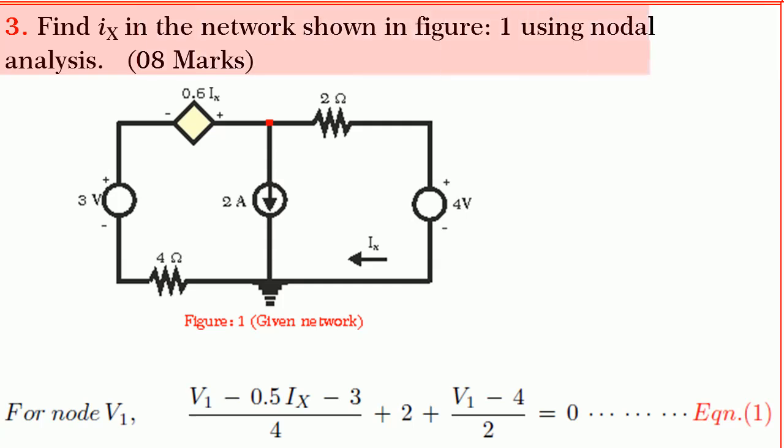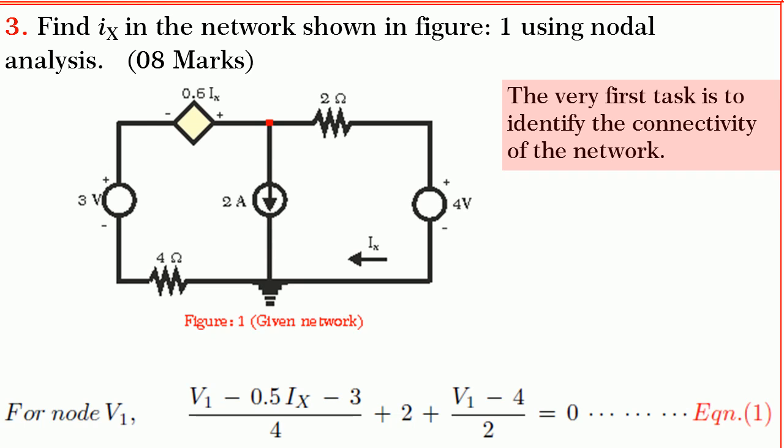Friends, next we shall take up the question on nodal analysis. In this problem, we are required to find ix using nodal analysis. The first important task is to identify the connectivity of the network. If you observe the network, you find that it is a two junction network. So, let V1 be the unknown junction voltage as shown in figure.